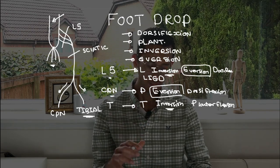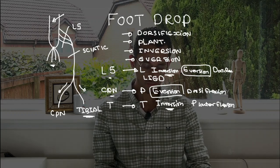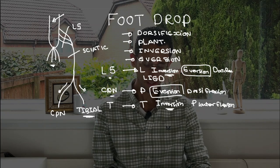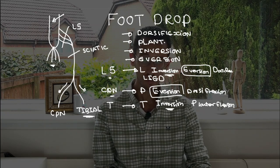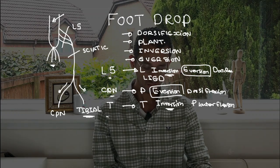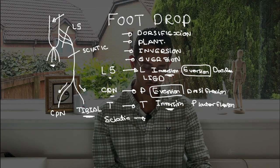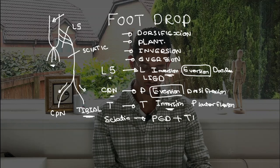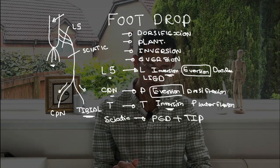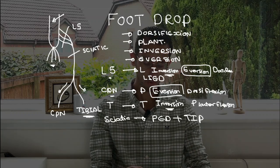Okay, so now what about the sciatic nerve? The sciatic nerve will basically, if it's affected, include everything. So it will include both the LIED and the PED and the TIP, because it has two branches: the common peroneal and the tibial nerve. So it makes sense if we say the sciatic nerve would basically be the PED plus the TIP, so that you can know what will happen if that's affected.